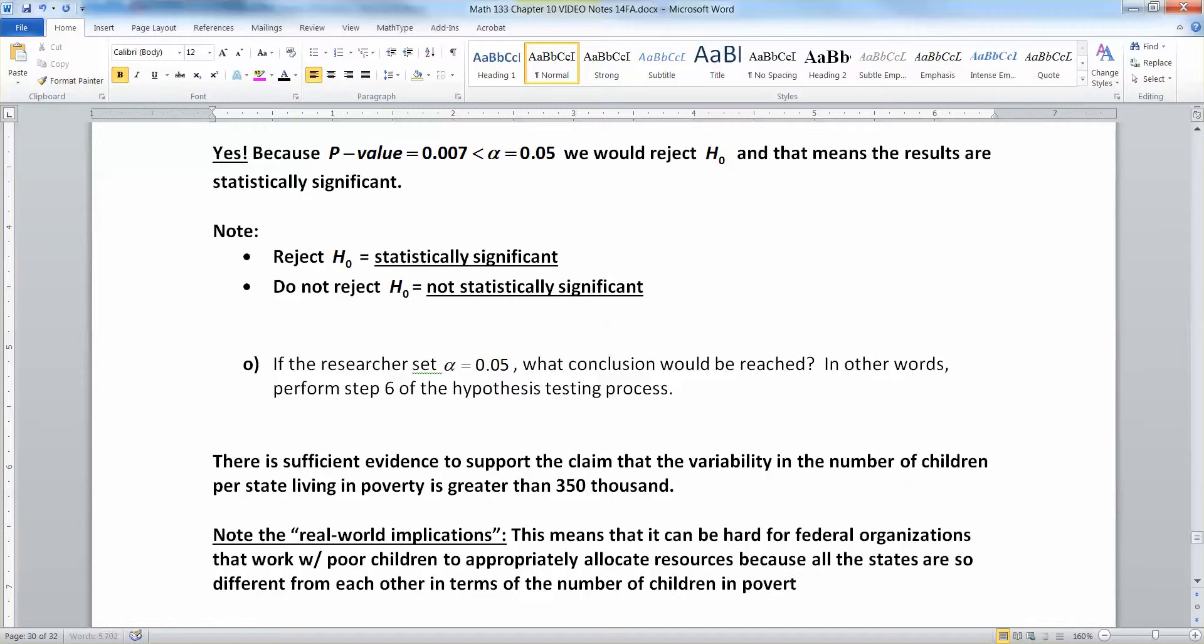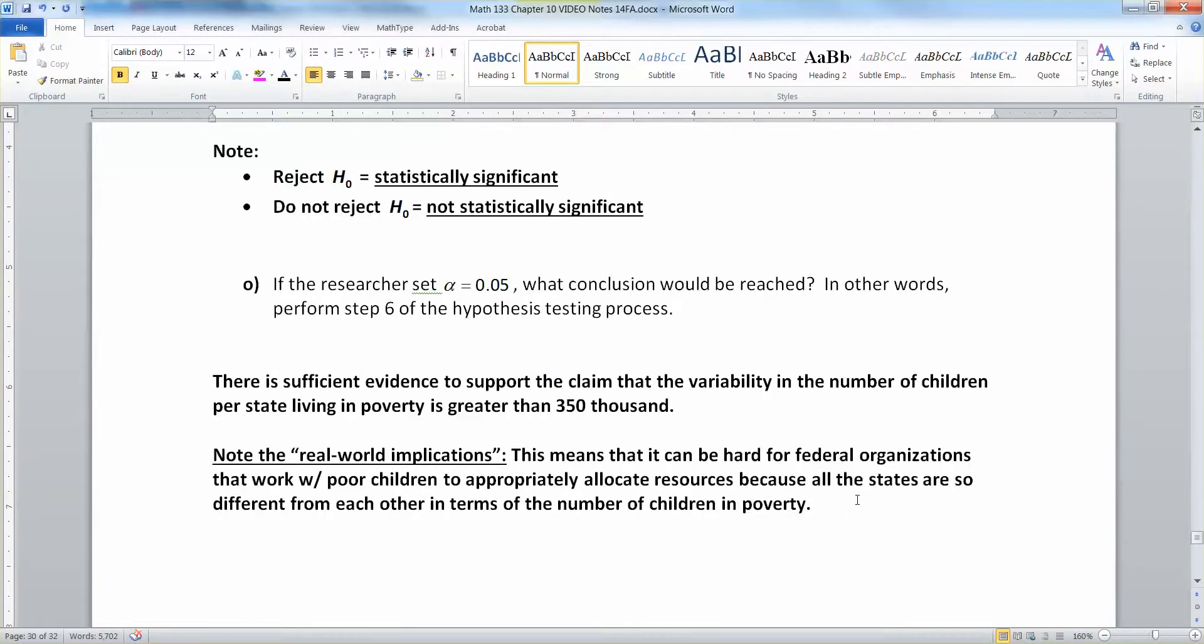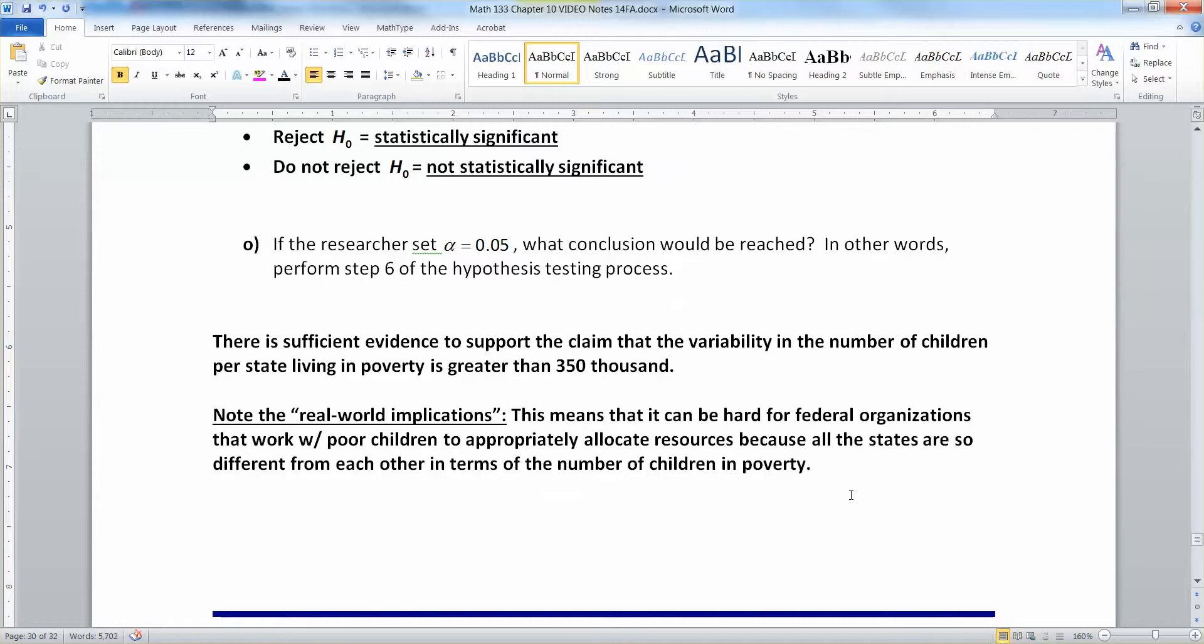You can imagine, for example, that California would have a lot of people in poverty simply because it has a lot of people, right? Whereas a state like Montana, even if it has a good percentage of people in poverty, it just doesn't have a huge population. So that can make it very difficult.